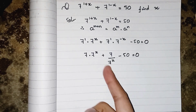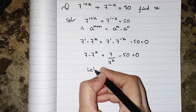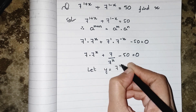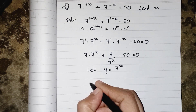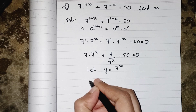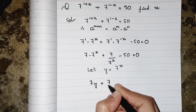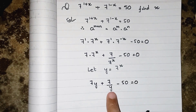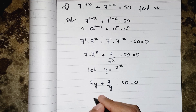Now this 7^x is in the denominator so we have to remove it. We see that both sides have 7^x, so we let y equal to 7^x to make it easier. In place of 7^x we write y, so it becomes 7y plus 7 upon y minus 50 equals to 0.